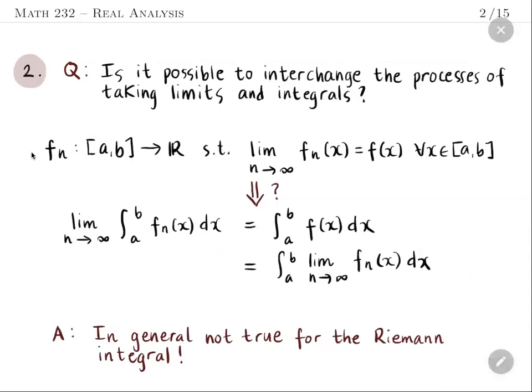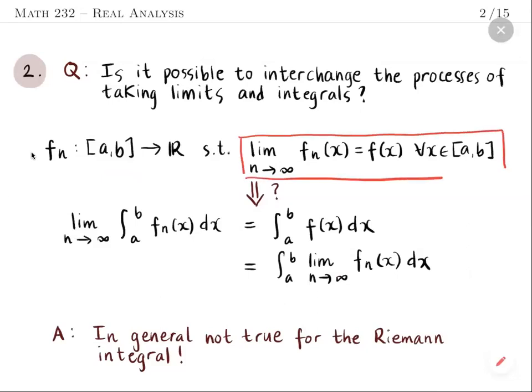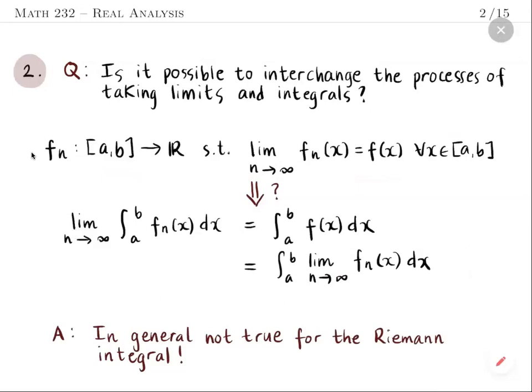Another limitation of Riemann integration concerns the following question: is it possible to interchange the processes of taking limits and integrals? Consider a sequence of functions f_n on a closed interval [a, b] such that f_n(x) tends to some function f at x for any point x in [a, b] — this is called pointwise convergence.